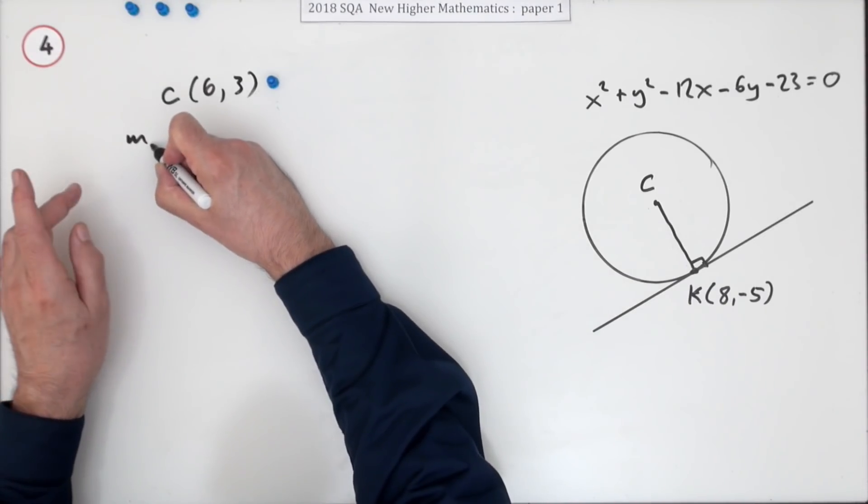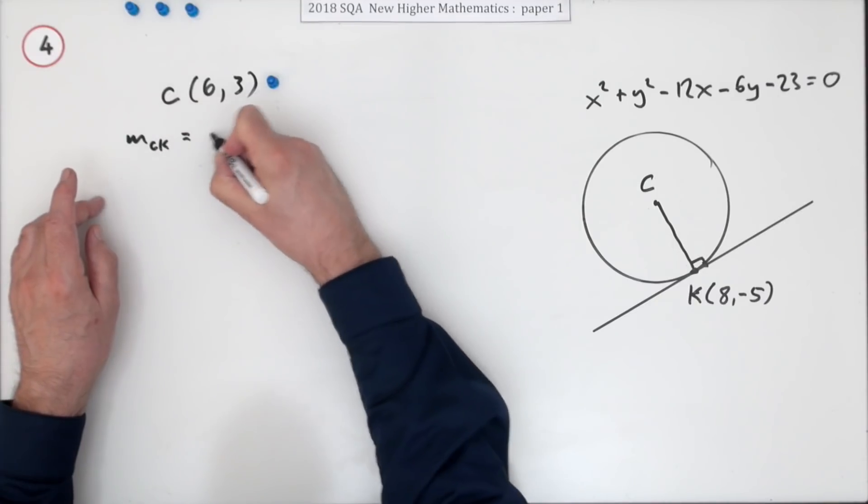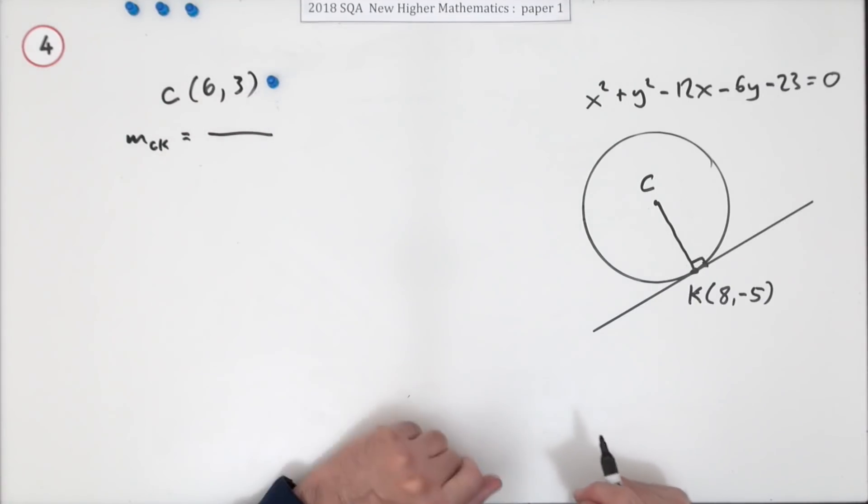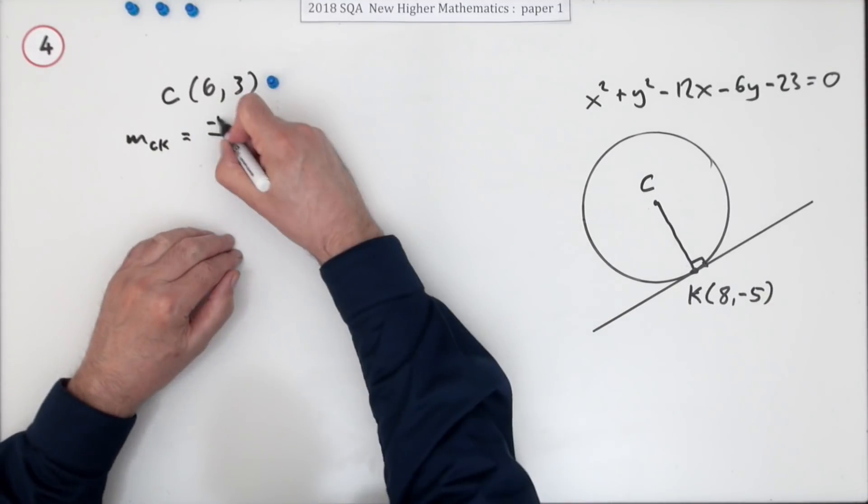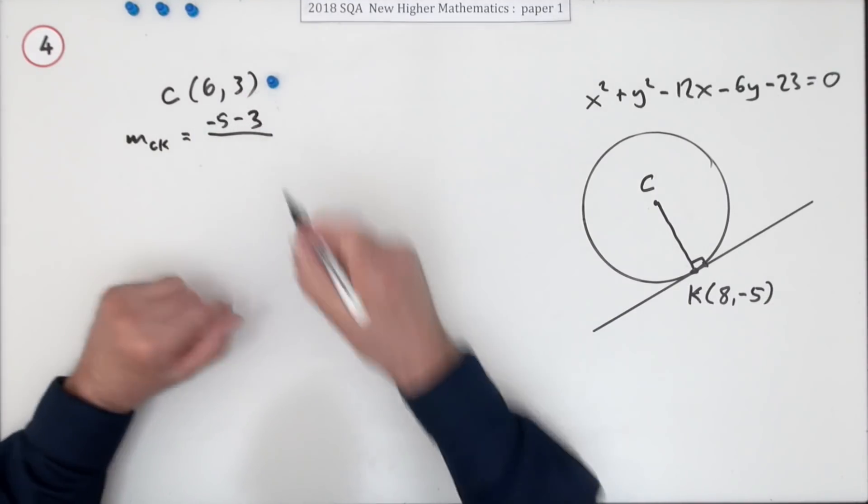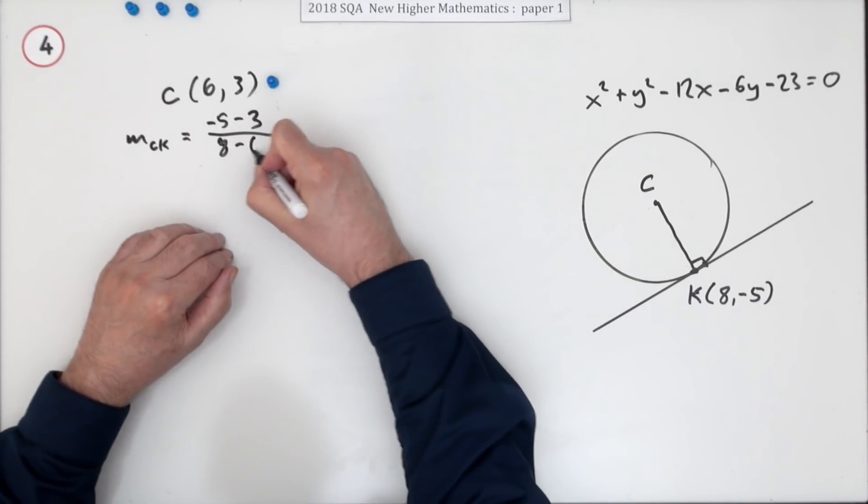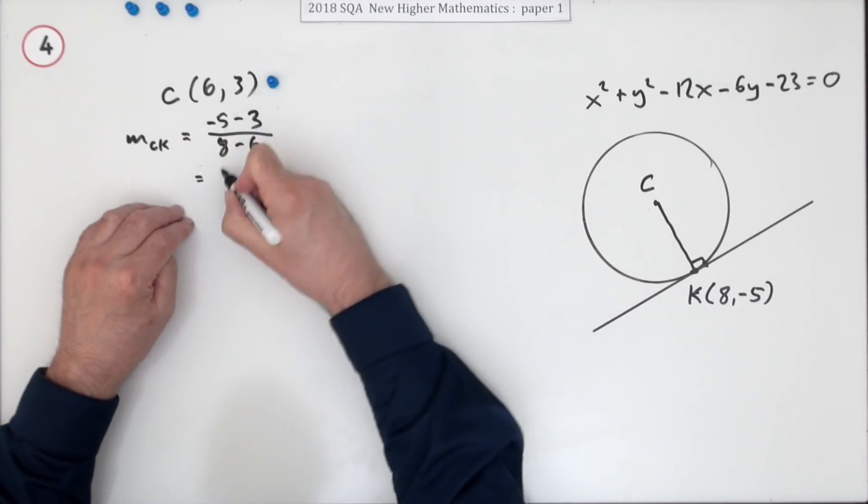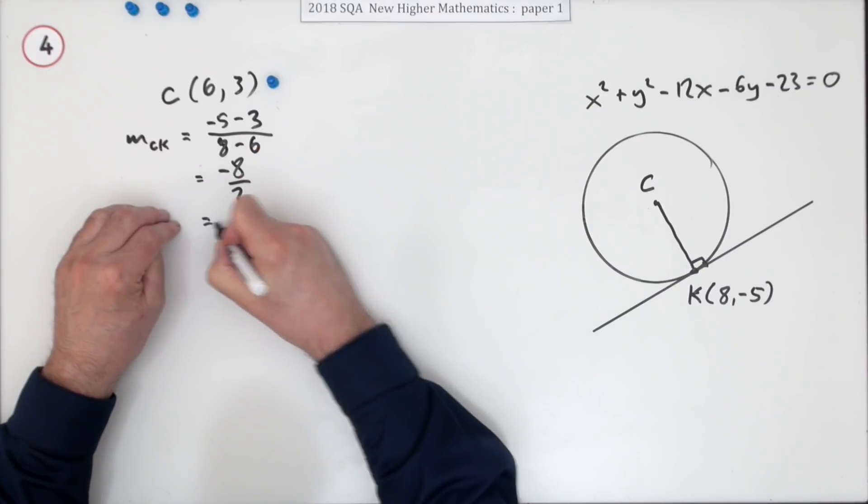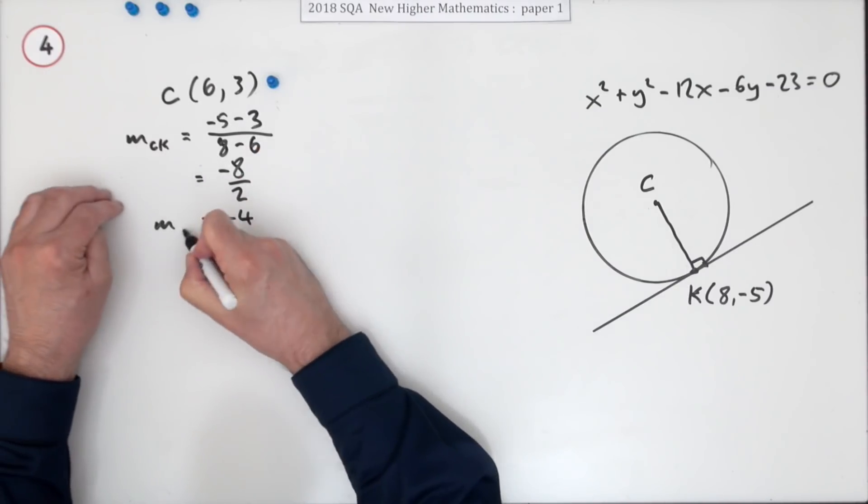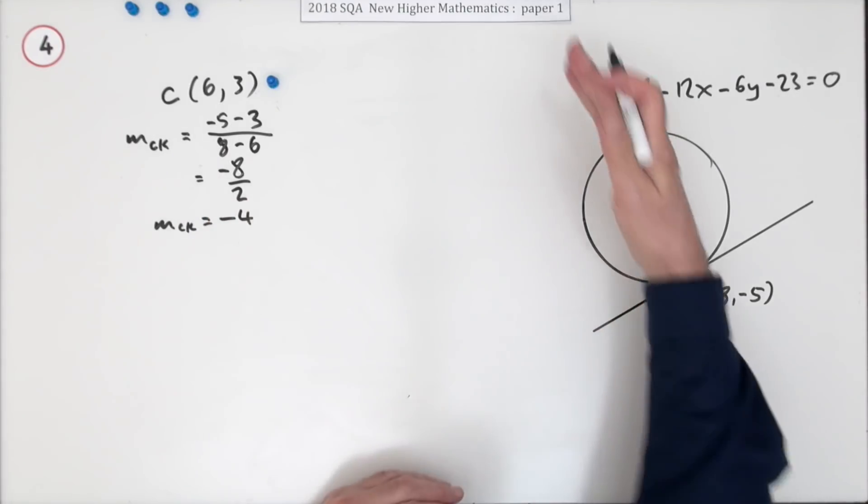Now you can get the gradient of the radius—call it m_r or maybe we'll call it CK in this case. Difference in the y-coordinates: -5 take away 3, or maybe you could just jump straight in with the answer, 8 take away 6 for the difference in the x-coordinates in the same order. -8 upon 2 is -4, and that looks about right because it's down and it's steep. That's worth a mark.